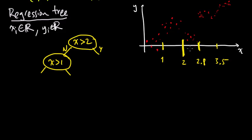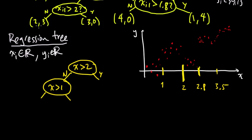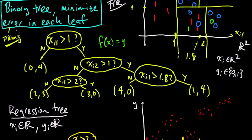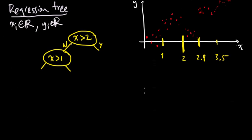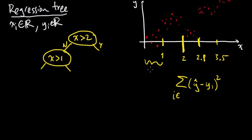So here we have all these points. Before, we counted the number of each class in each leaf, but we can't do that here because we don't have classes — we just have real-valued numbers. Our general strategy is to minimize the error in each leaf. The error we will use is the squared error. We're going to choose a ŷ for each region that minimizes this. Let me call this region R1, where R1 is defined as all the indices i such that x_i is less than 1.